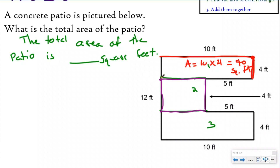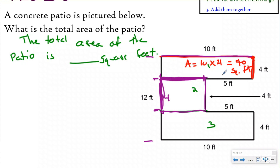Now I need the area of the second rectangle — I need my length and width. I can't use 12 because that would be overlapping; 12 goes from here all the way to here. I only want from here to here, so I look opposite parallel, which tells me the width is four. For the length, I can't say it's 10 because 10 covers the entire top. Using opposite parallel: from here to here is five, and five plus five equals 10, so this part must also be five. Multiplying five times four gives 20 square feet.